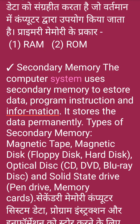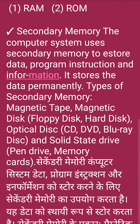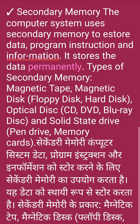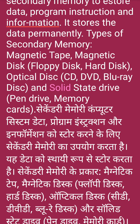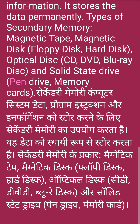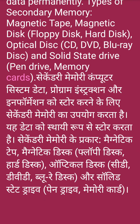Secondary memory. The computer system uses secondary memory to store data, program instructions, and information. It stores the data permanently. Types of secondary memory: magnetic tape, magnetic disk, floppy disk, hard disk, optical disk, CD, DVD, Blu-ray disk, solid state drive, pen drive, memory cards.